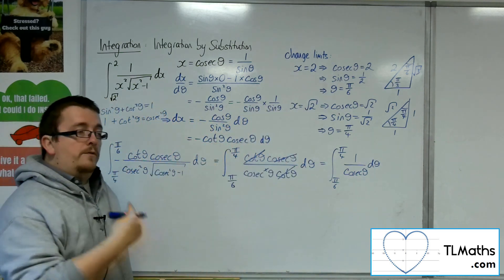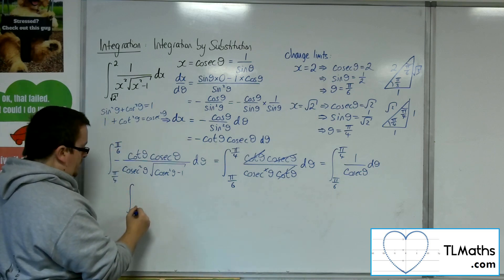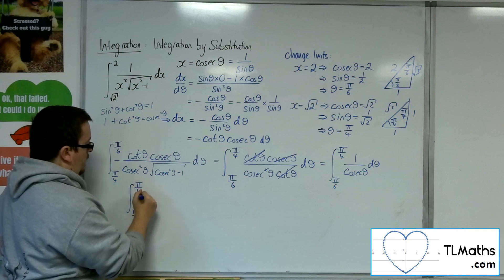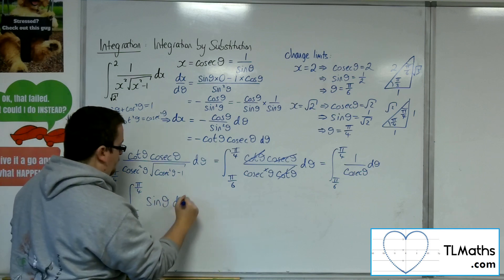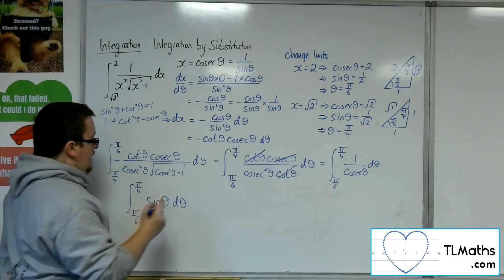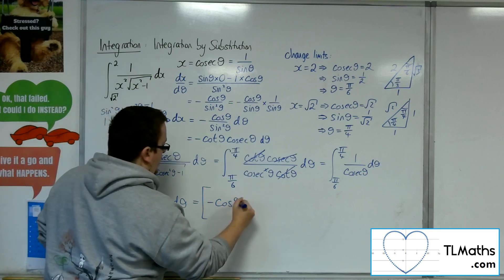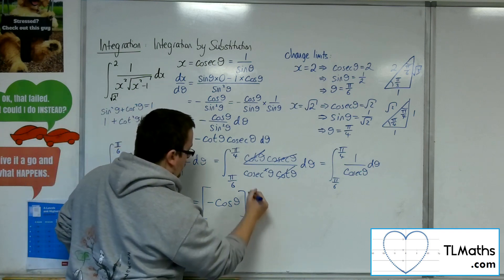However, cosec is just 1 over sine. So actually I've just got 1 over 1 over sine, which is just sine. So that's just sine theta d theta. Now I know that sine theta integrates to minus cosine theta. Pi over 6, pi over 4.